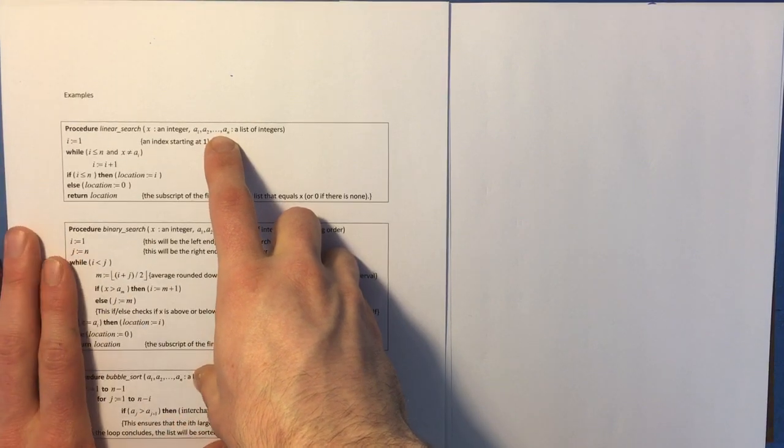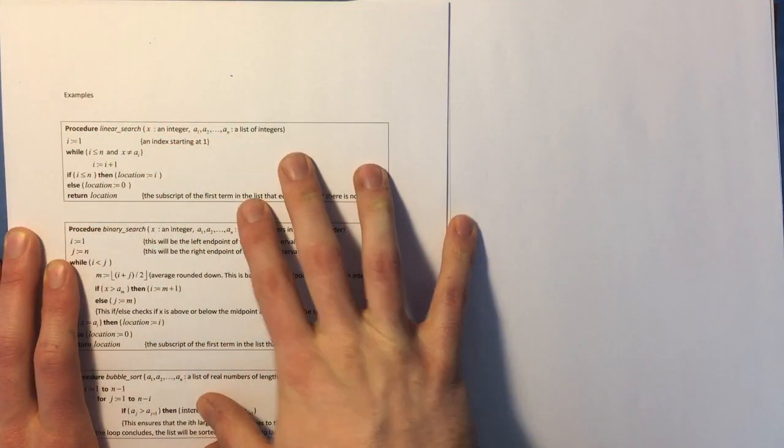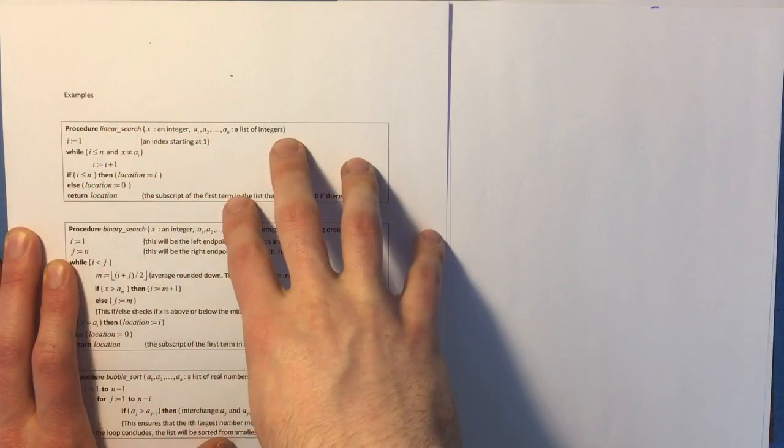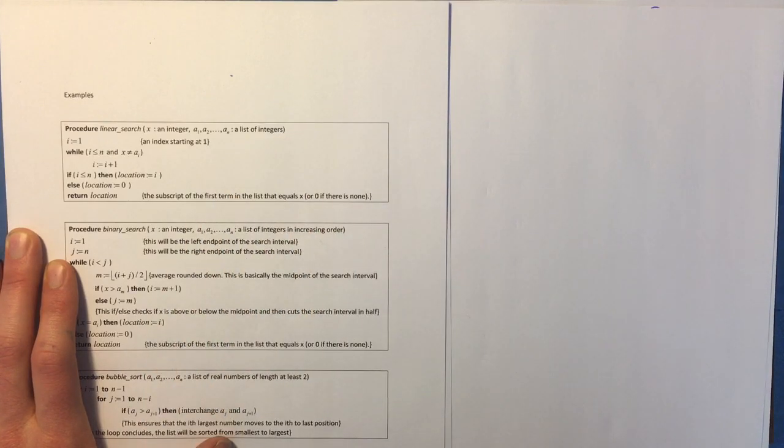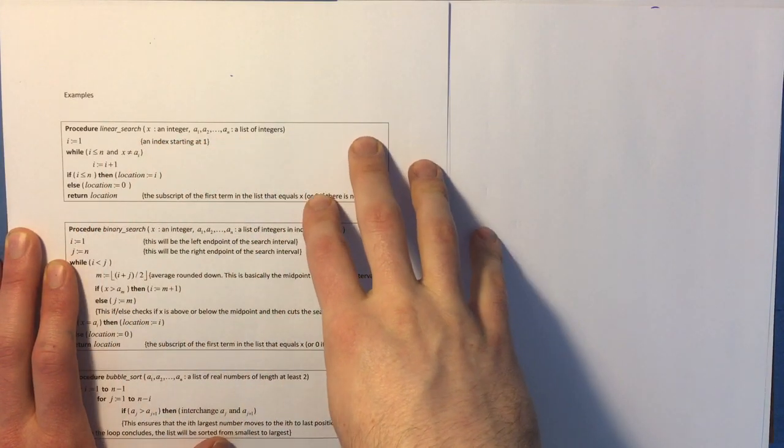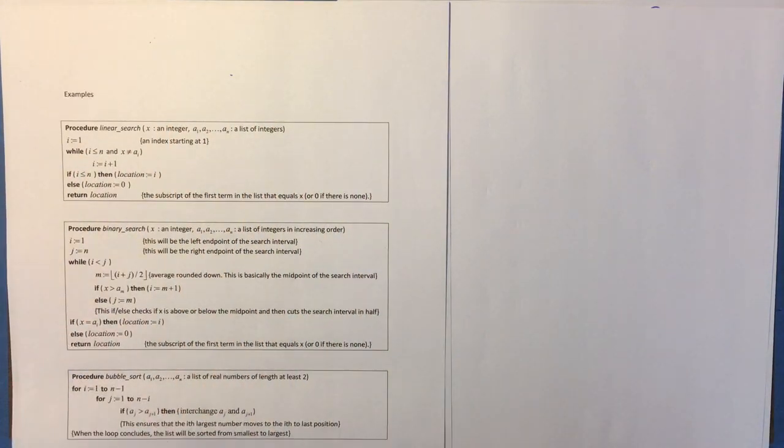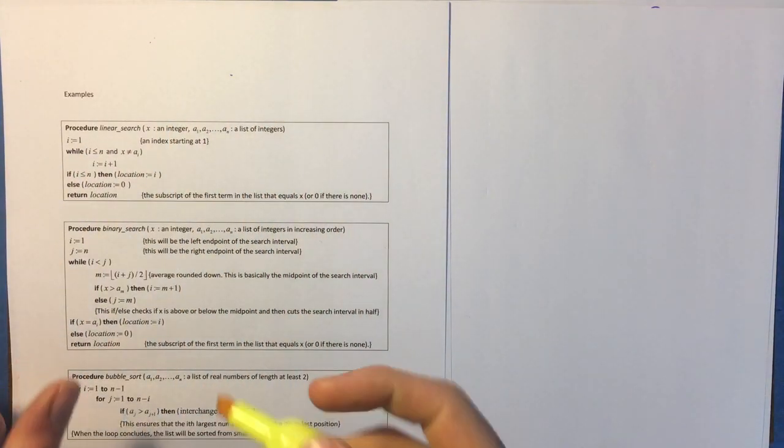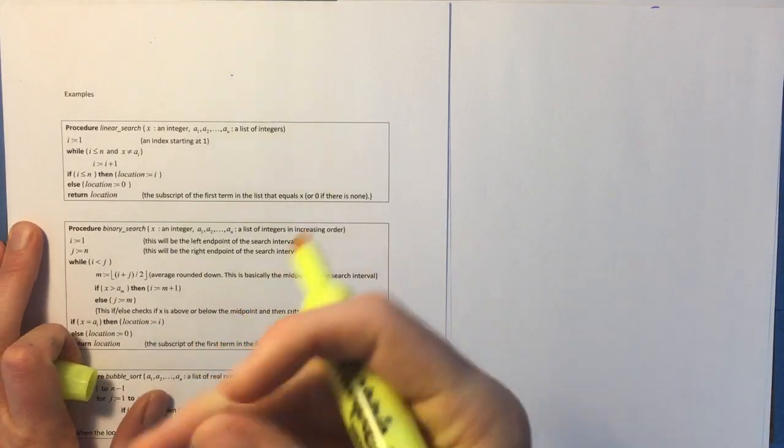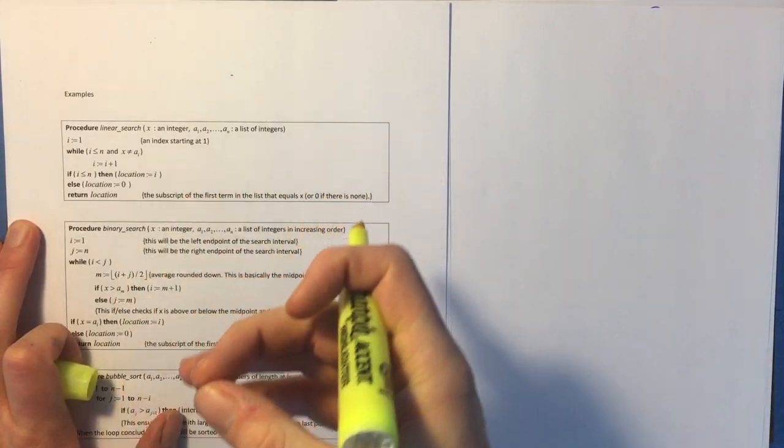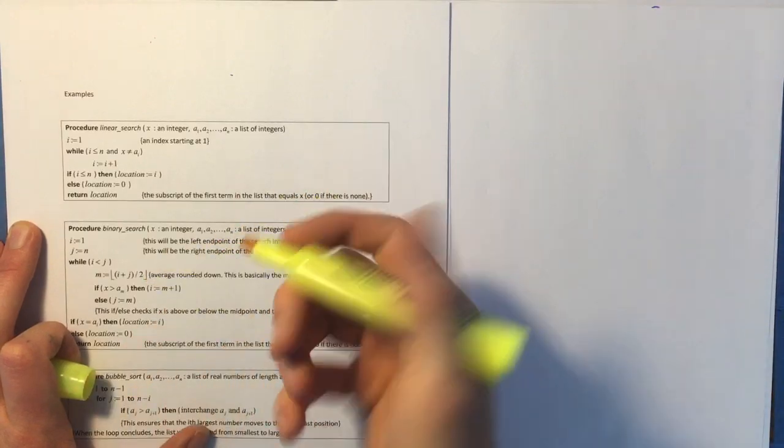So what we want to do is try to figure out how many operations we're going to have in this algorithm, worst case scenario, as a function of n, where n is the number of elements in the list. Well, let's see. I'm going to go through and count assignments and comparisons and additions, which are the types of things we have in here.